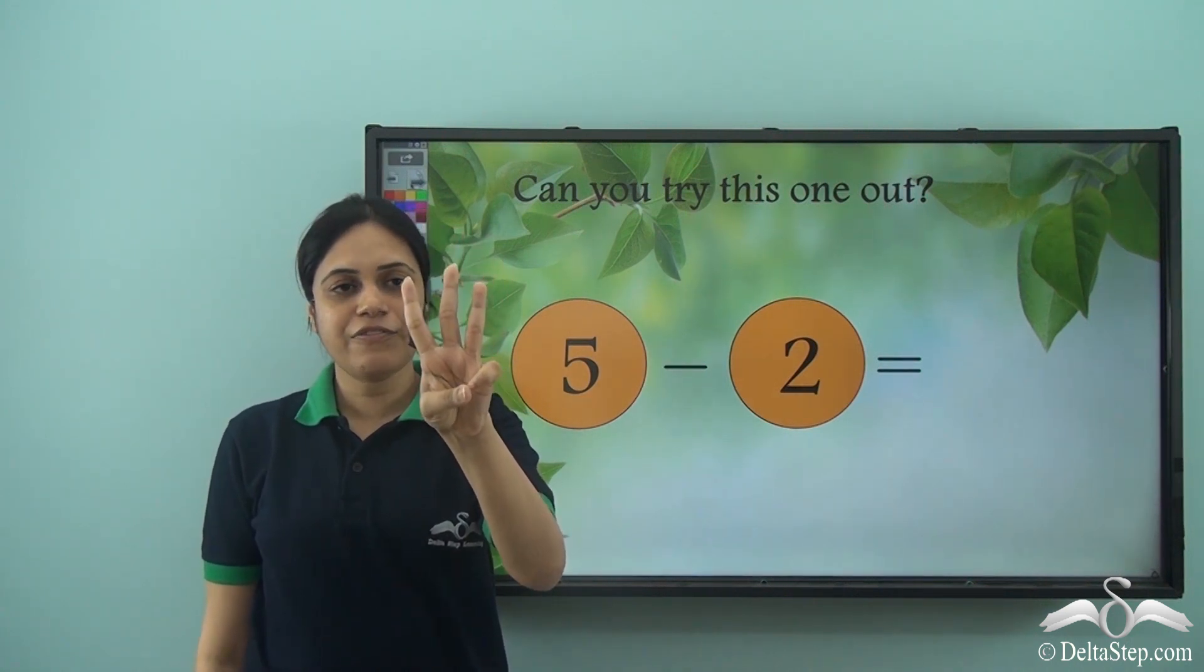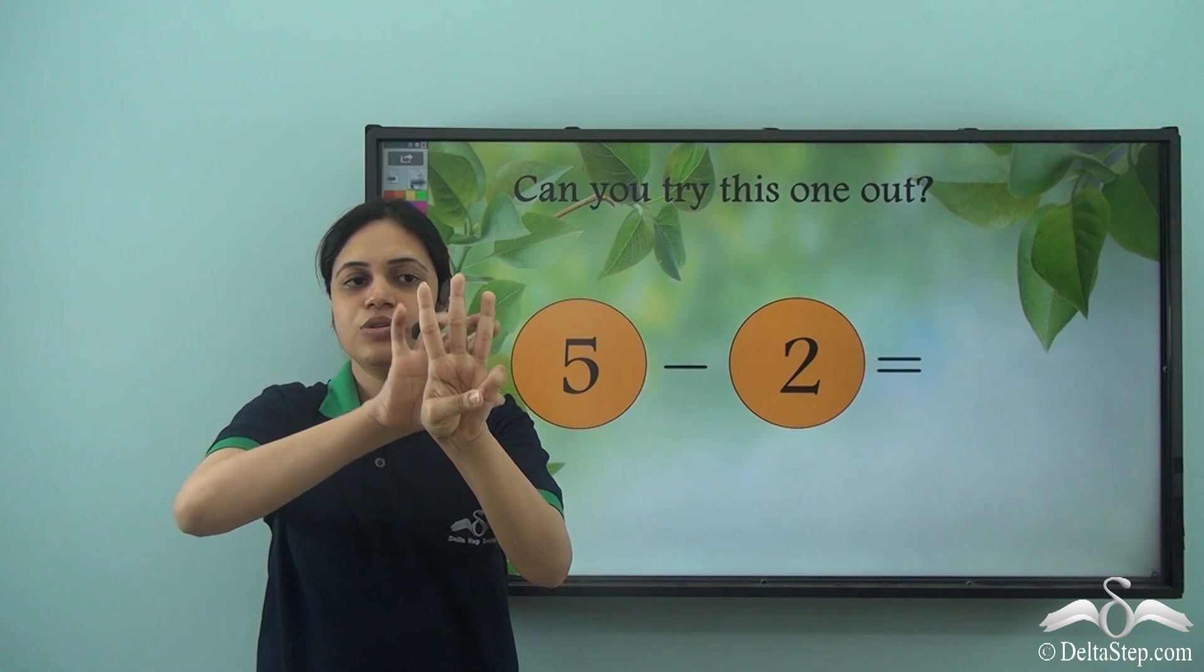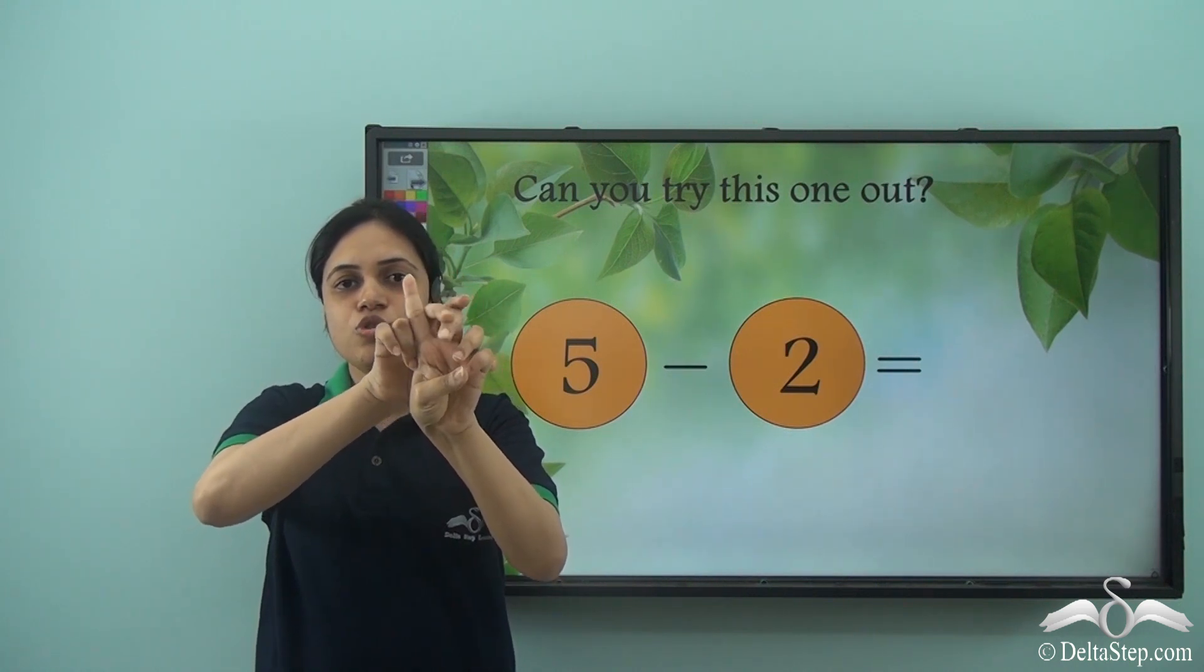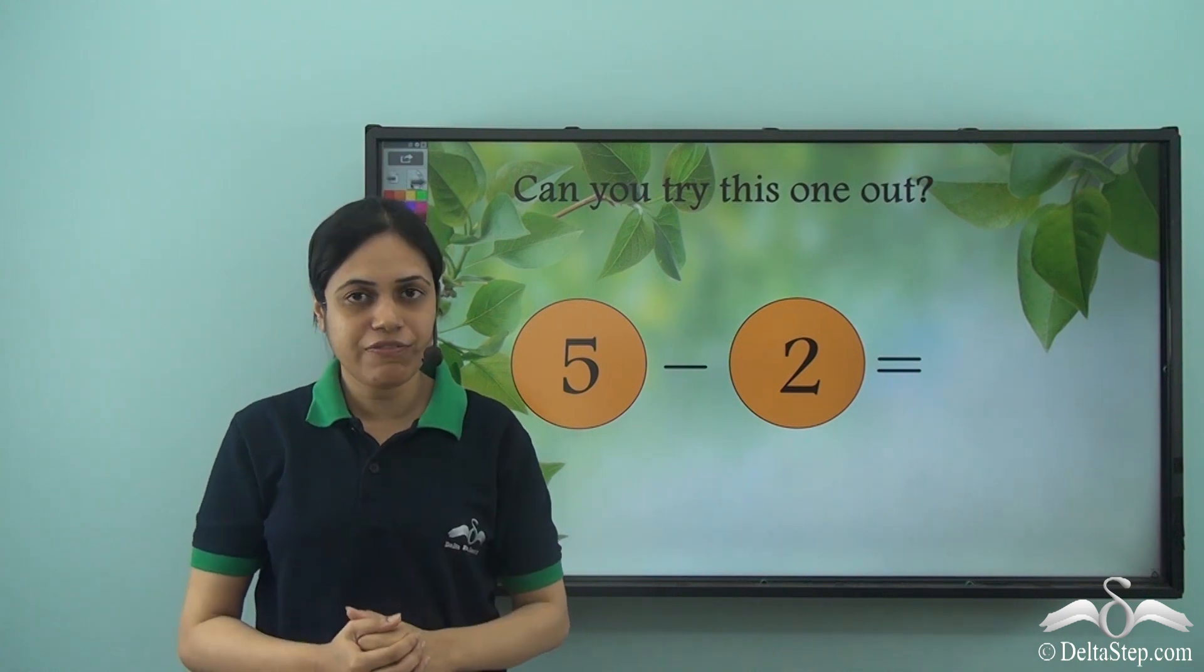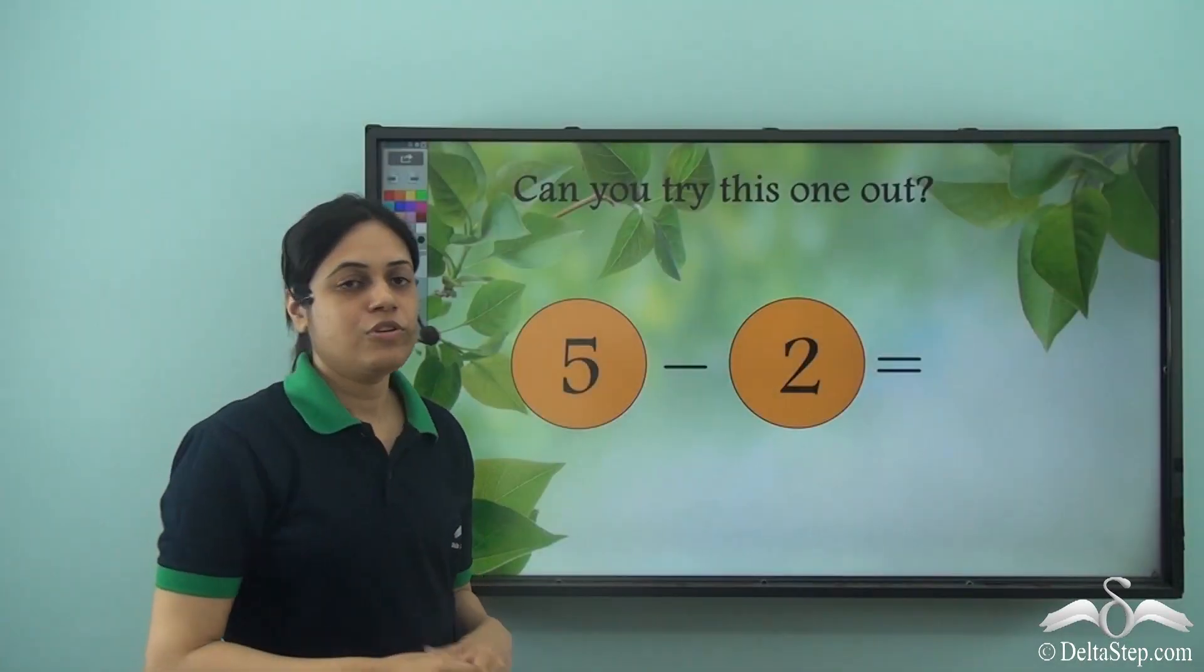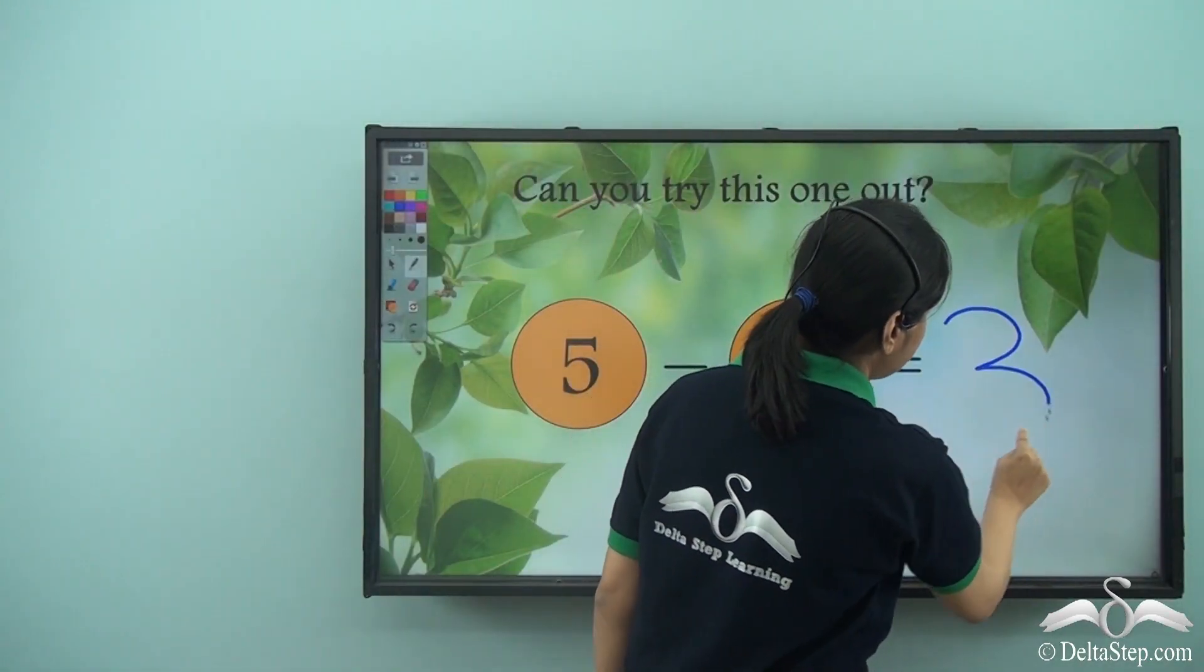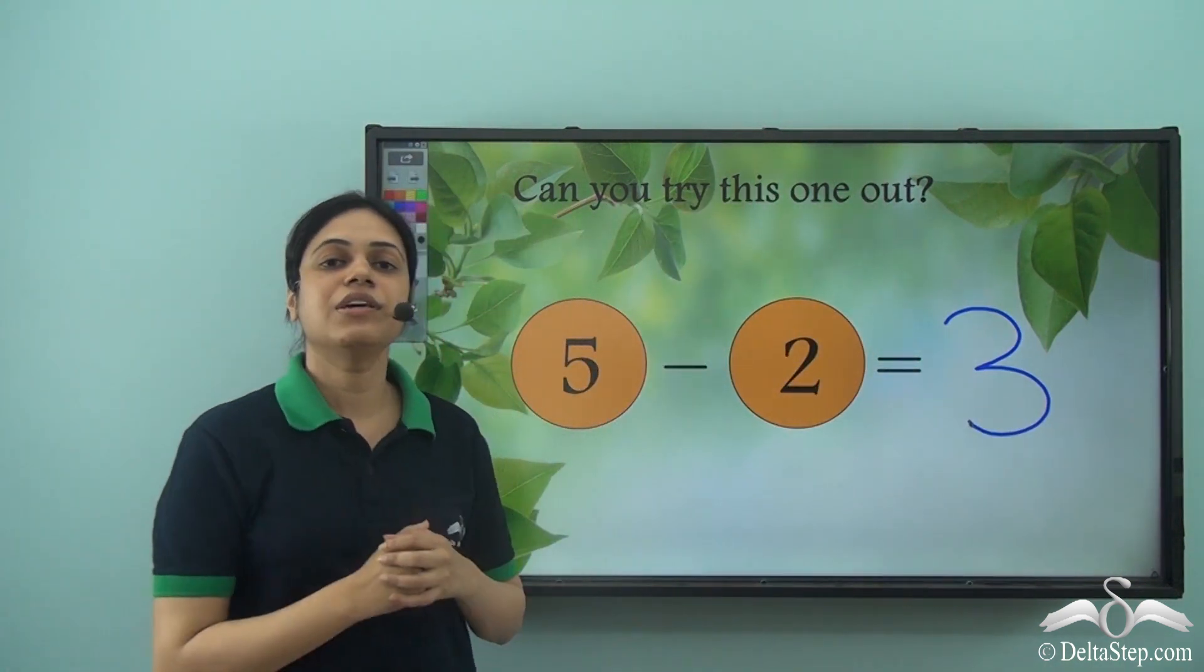How many fingers am I left with? Let's count. One, two, three. So I am left with three fingers. So the answer to this subtraction is three.